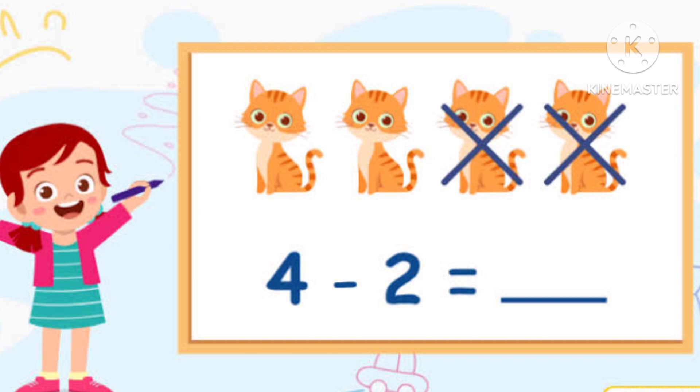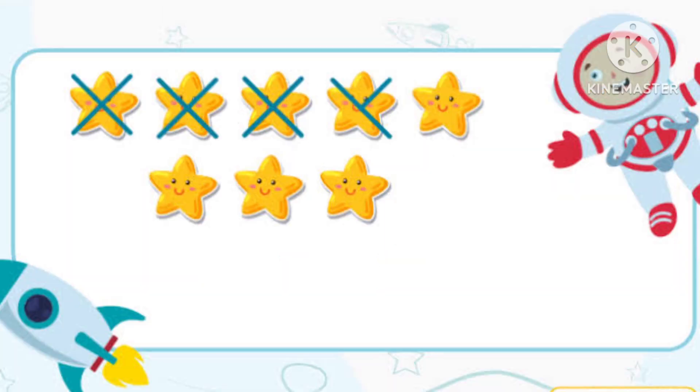There were four cats, and two cats went away. So how many cats left? Two cats. Next,